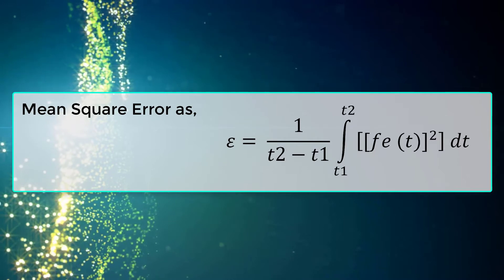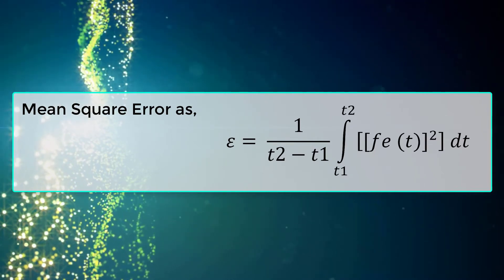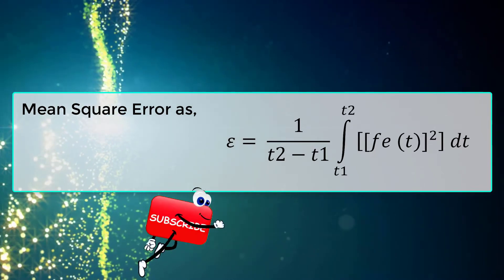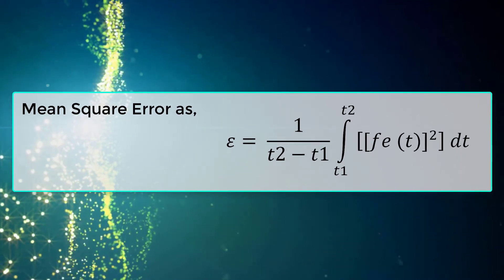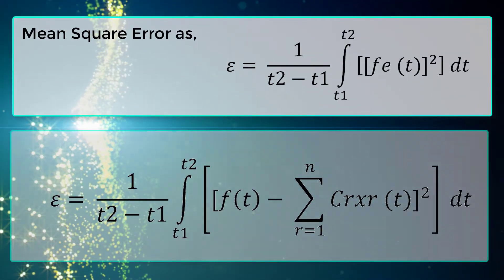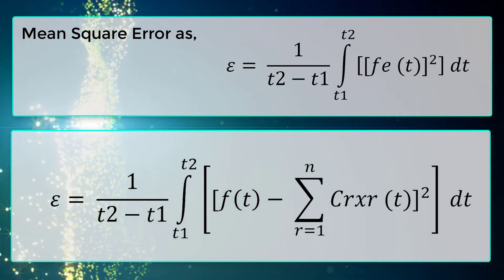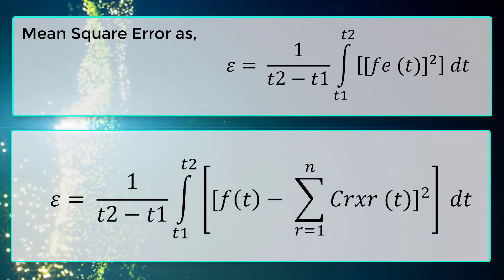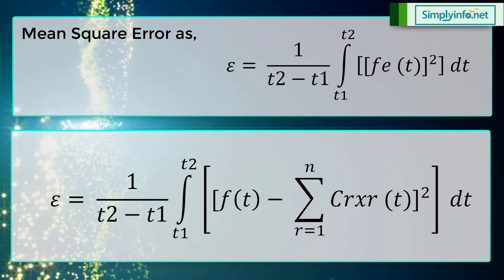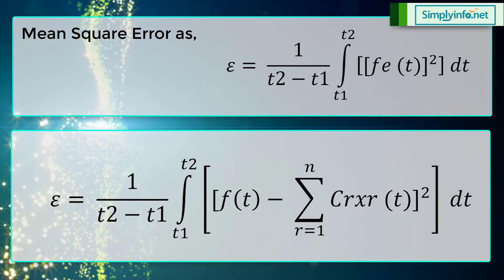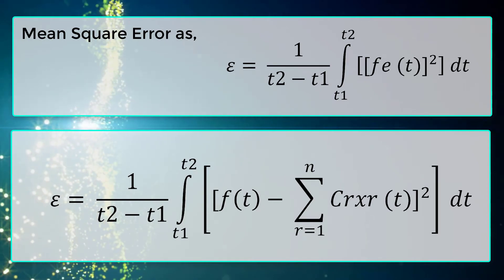The mean square error epsilon is defined as: epsilon equals 1 over (t2 minus t1) times the integral from t1 to t2 of fe(t) squared dt, which expands to 1 over (t2 minus t1) times the integral from t1 to t2 of f(t) minus the summation from r equals 1 to n of cr times xr(t), all squared, dt.